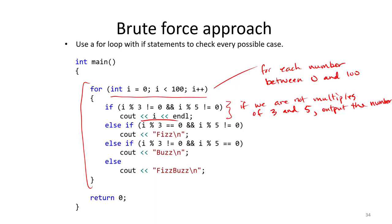And then here, we're checking if we are just a multiple of 3, then we output Fizz. And then if we're a multiple of 5, output Buzz.